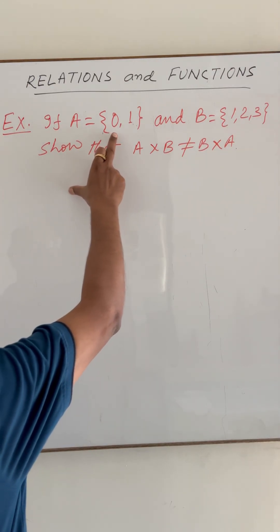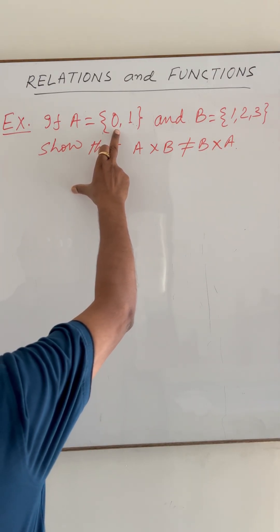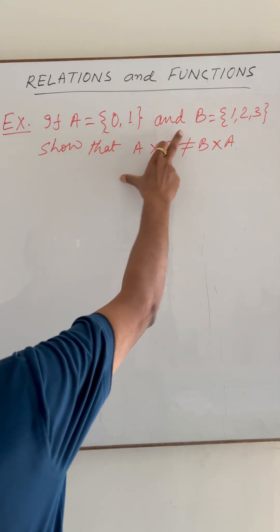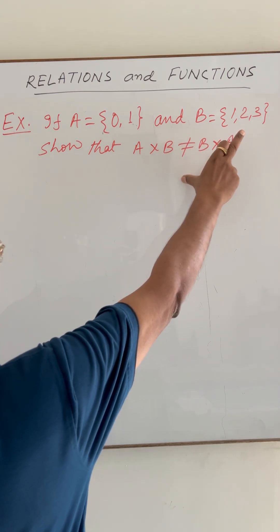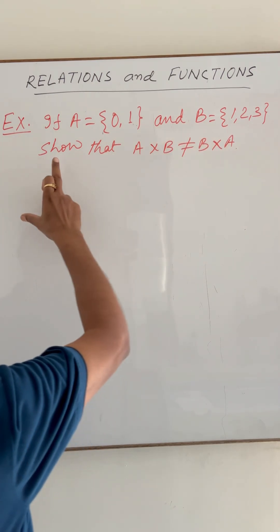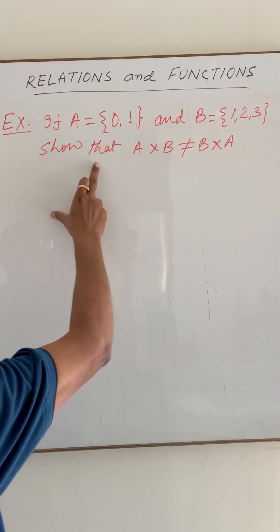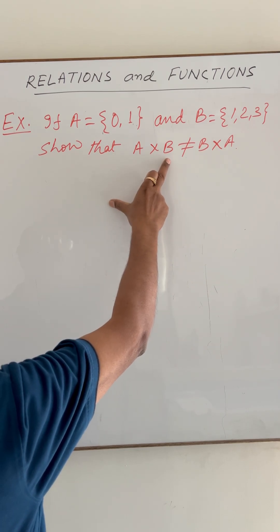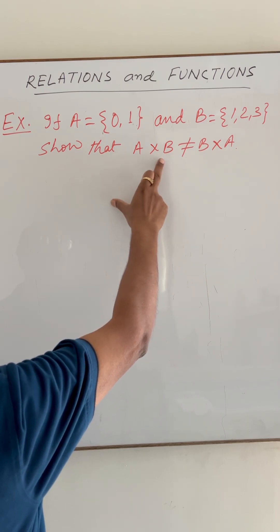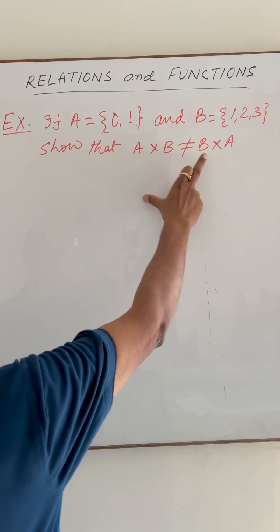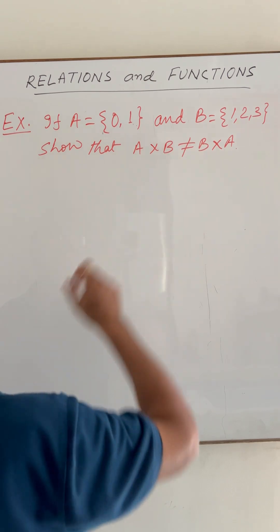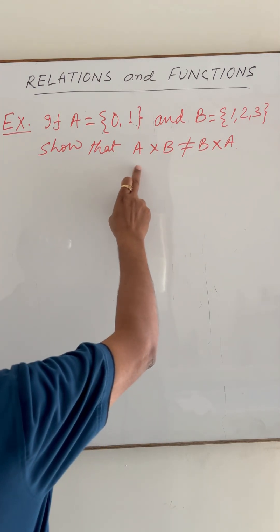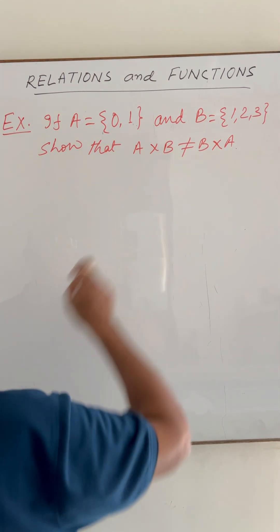The question is: if A is the set having elements 0, 1 and B is the set having elements 1, 2, 3, then we have to show that the Cartesian product A cross B is not equal to B cross A, meaning the commutative law does not hold here.